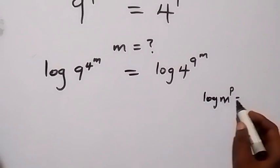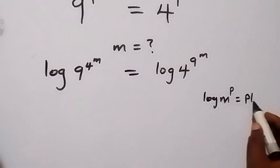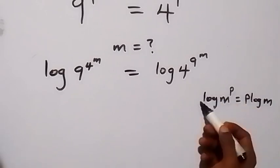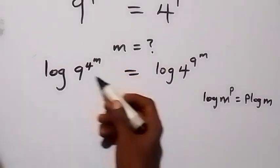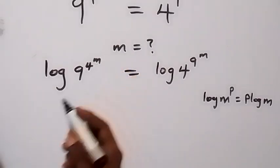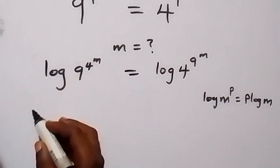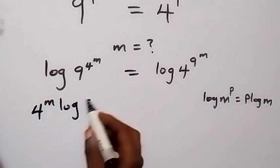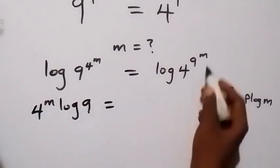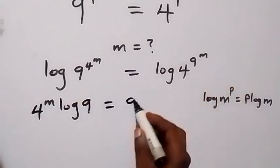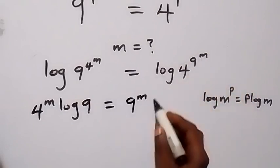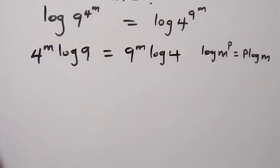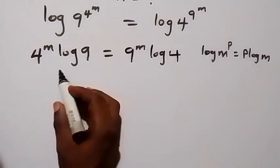From the power law of logarithm, the power can come to the front. So here the power is — let's treat 4 raised to power n as the first power — and when it comes down we have 4 raised to power n times log 9, which equals 9 raised to power n times log 4.